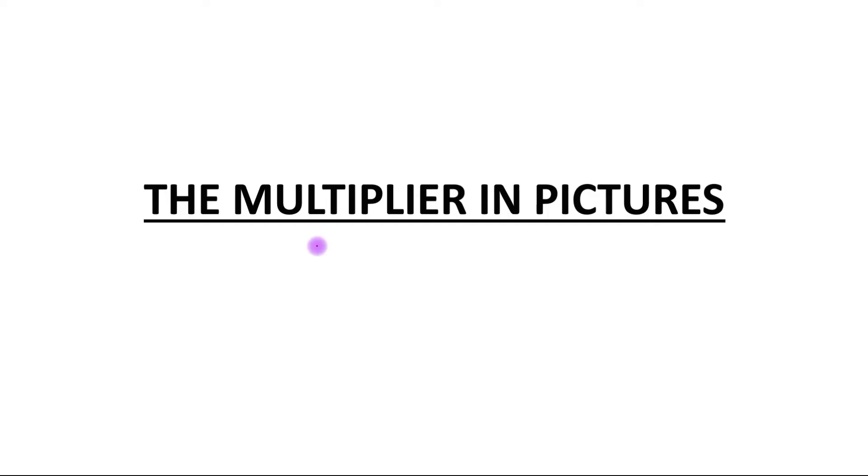Hello students, today's topic is the multiplier in pictures. In this topic we will see a graphical interpretation of an increase in autonomous spending on the equilibrium level of income. Let's start with this topic.